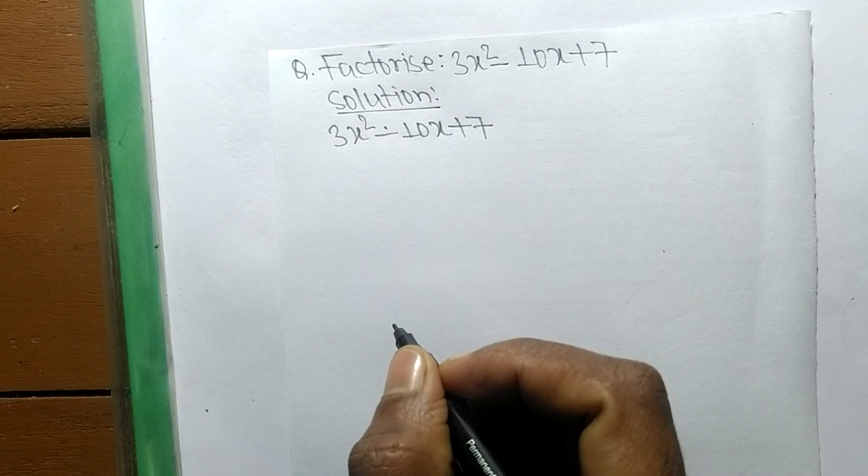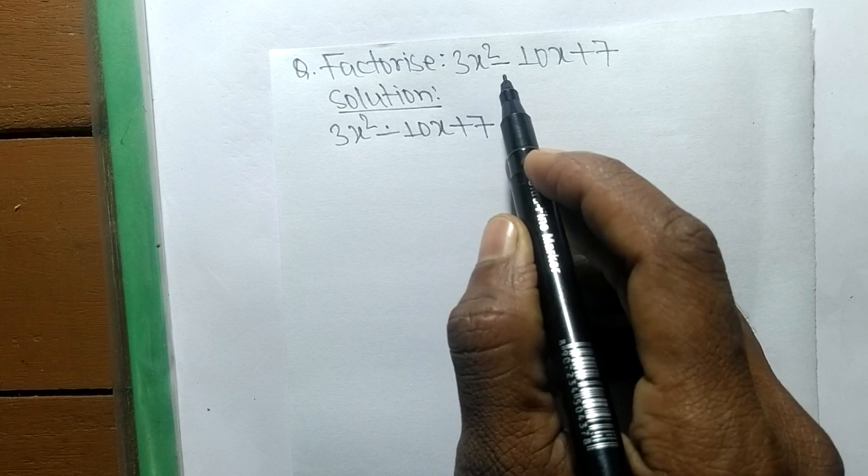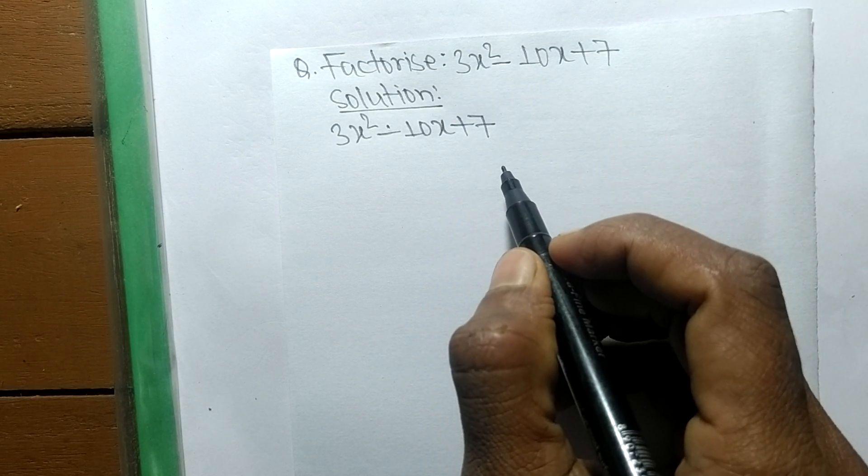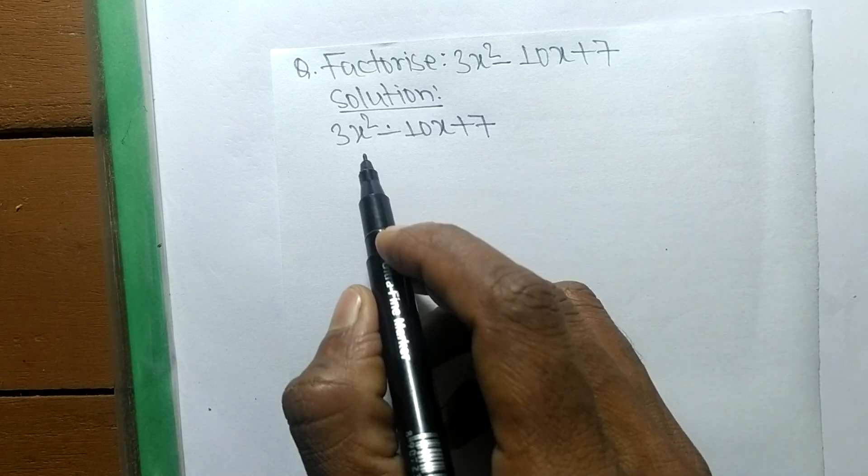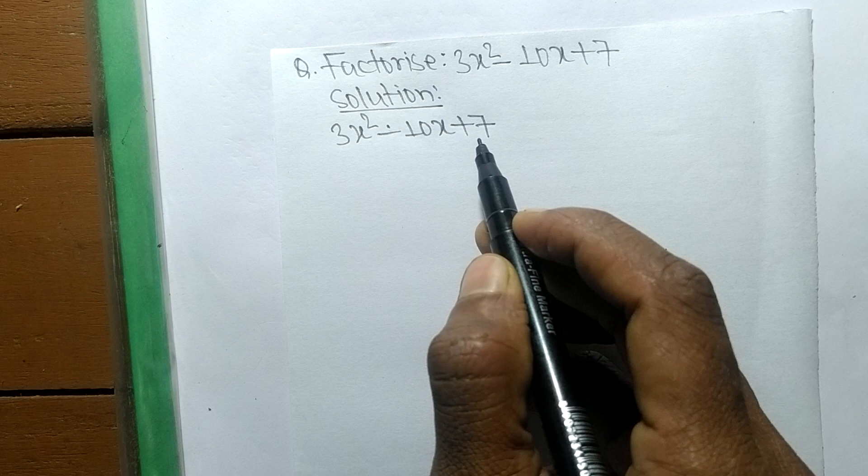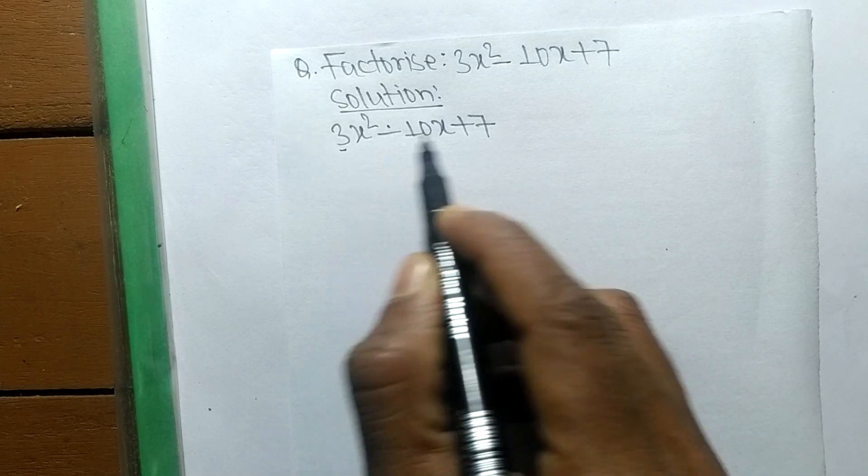Today in this video we shall learn to factorize 3x² - 10x + 7. For the solution, first we have to find out the factors of the first and last number.